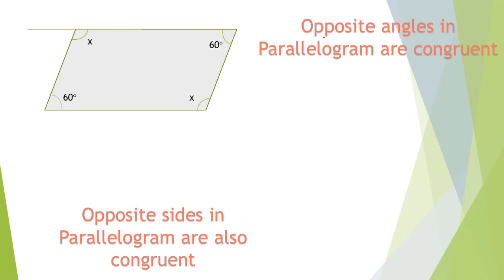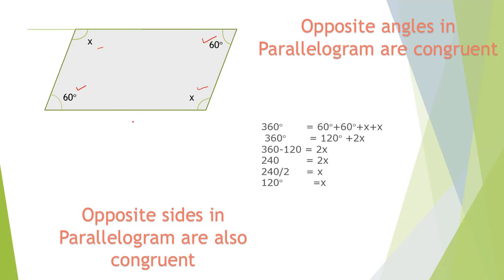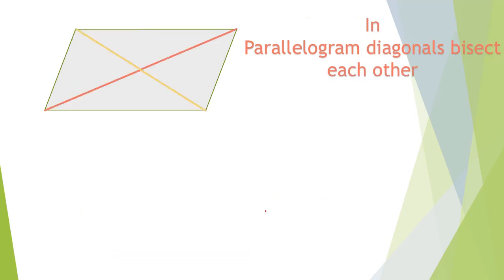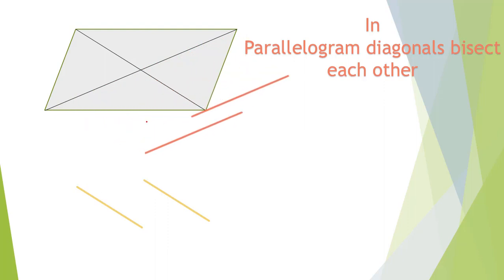Let's study some facts about parallelograms. Opposite angles in a parallelogram are congruent, and opposite sides are also congruent. If we know the measure of two angles, we can figure out the remaining two, since angles inside a quadrilateral add up to 360 degrees and we can create an equation to find x. In every parallelogram, diagonals bisect each other — the yellow line bisects the red line into two equal parts, and the red line bisects the yellow line into two equal parts.